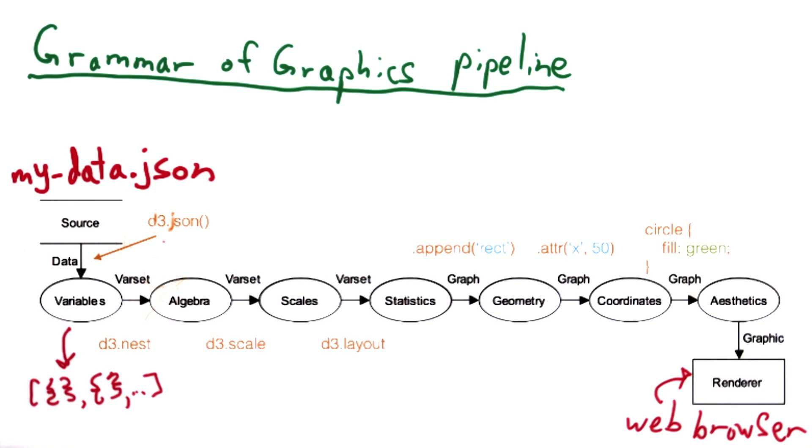When called with a data file, D3 makes an AJAX request to load whatever your data file is, in this case myData.json, and turns it into an array of JavaScript objects.